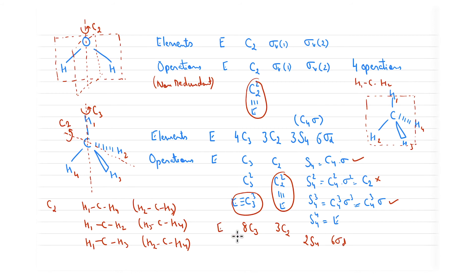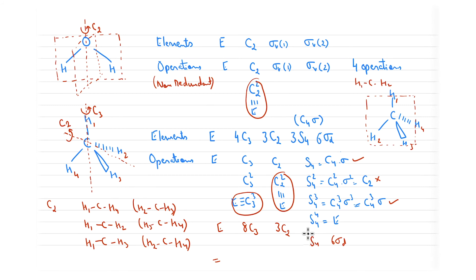Each sigma-d generates one operation, giving six sigma-d operations. Total operations: 1 (E) + 8 (C3) + 3 (C2) + 6 (S4) + 6 (sigma-d) = 24 operations.